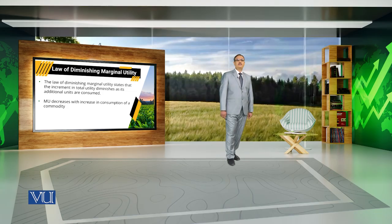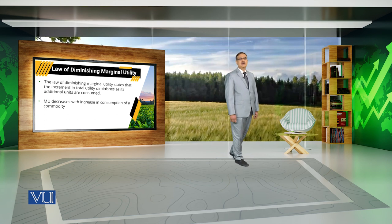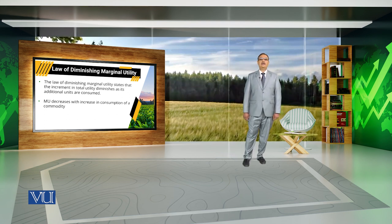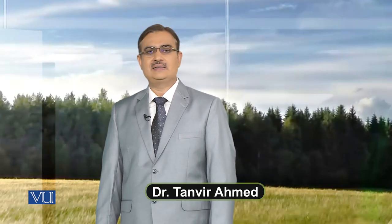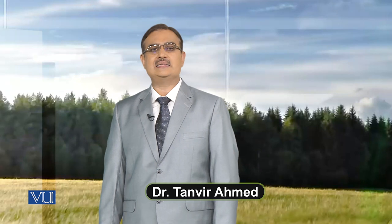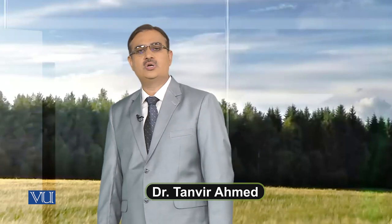This Law of Diminishing Marginal Utility states that the increment in total utility diminishes as its additional units are consumed by a particular consumer. So consistent usage of a particular commodity results in increase in total utility at a decreasing rate.